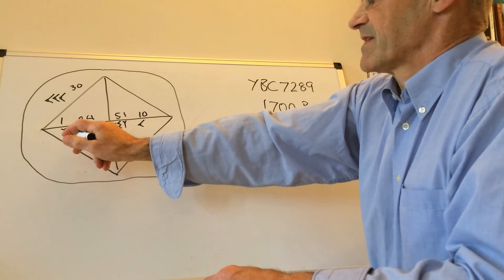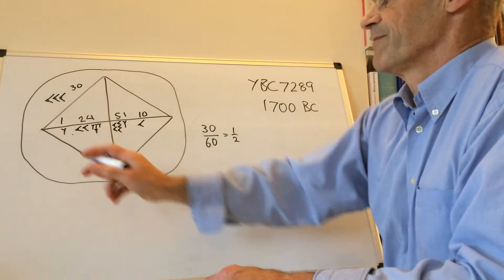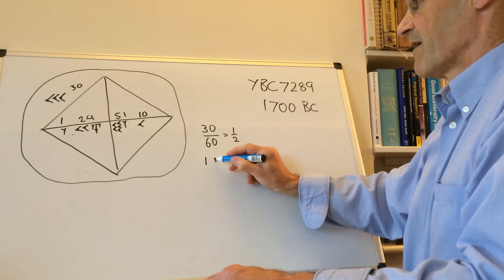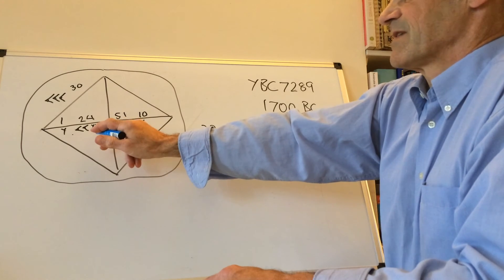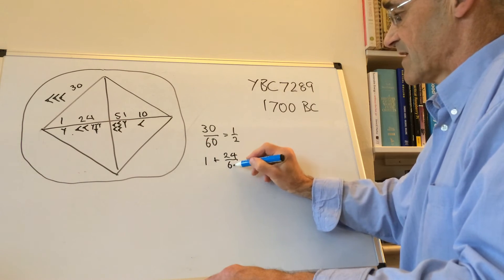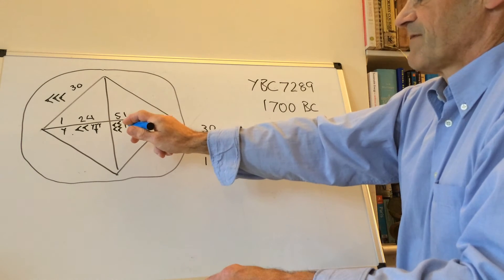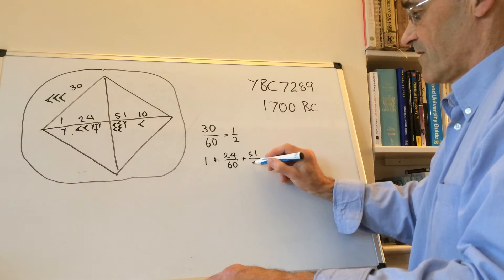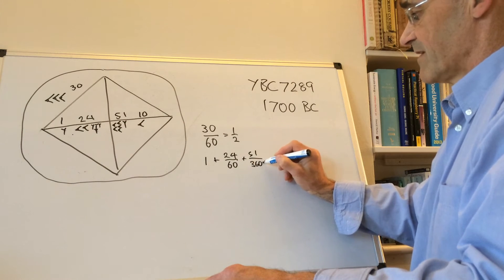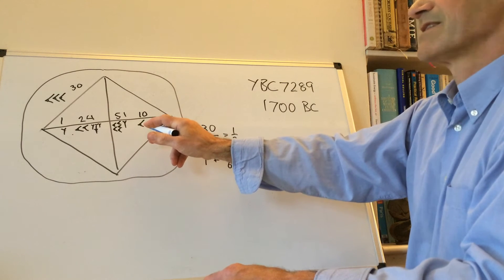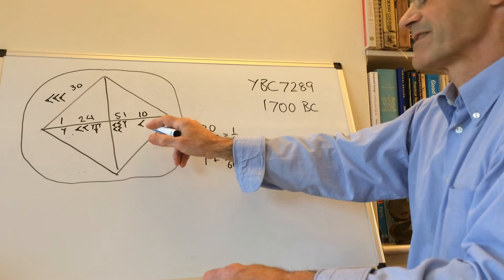And that the decimal point goes here, so this is a one, and then this is the number of 60ths. So that's 24 over 60, and this is 51 over 3600.